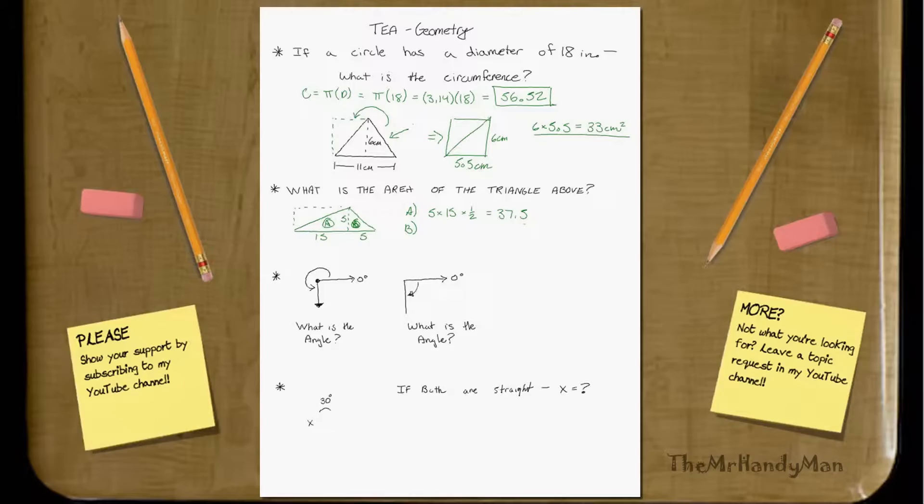Then we do the B portion, which is just 5 times 5 times 1 half again, and that equals 12 and a half. 5 times 5 is 25, and half of that is 12.5. And then you can just add them up together. That way, you can really just break it down into triangles, which are easier to swallow. When you add that up together, that's going to equal around 50.